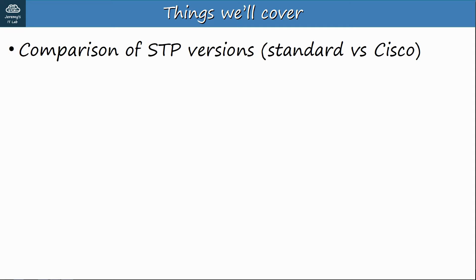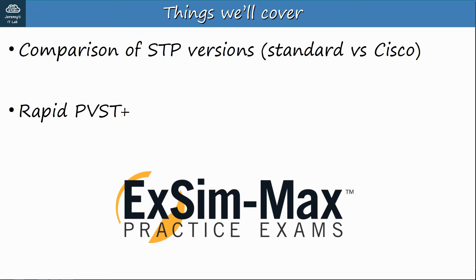Let's take a look at what we'll cover in this video. First, let's take a few minutes to compare different versions of STP: STP, PVST+, rapid STP, rapid PVST+, and multiple spanning tree. Then the rest of the video will be all about rapid spanning tree, specifically rapid per VLAN spanning tree plus. Also, make sure to watch until the end for a bonus question from Boson Software's ExSim for the CCNA, a set of practice exams which I highly recommend.